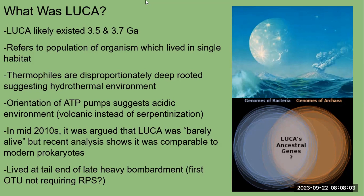Most estimates for the age of the last universal common ancestor are between 3.7 and 3.5 billion years ago. One thing to note is that LUCA doesn't refer to a single cell which divided, with one daughter cell ultimately giving rise to bacteria and the other giving rise to archaea. Rather, it refers to a population of organisms in a single habitat.